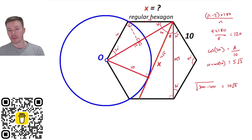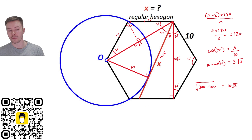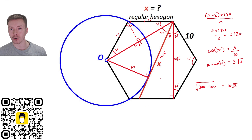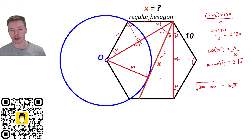We can work out alpha using trigonometry with any of these sides, then take it away from 60 to get beta. Then use trigonometry again with beta and 10√3 to get the full side length x. However, doing it that way gives a decimal answer rather than an exact answer — to get an exact answer we need to be more careful, because the calculator won't give an exact result that way.